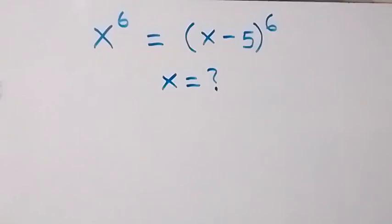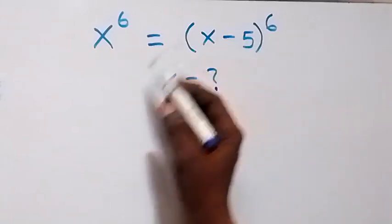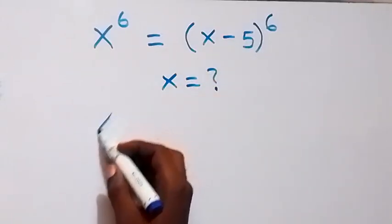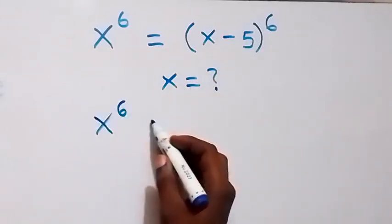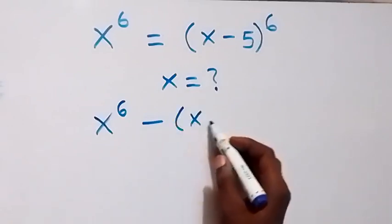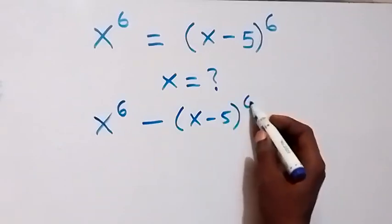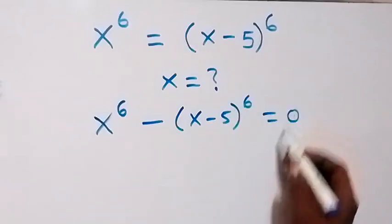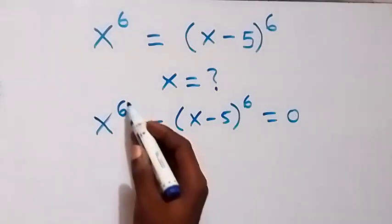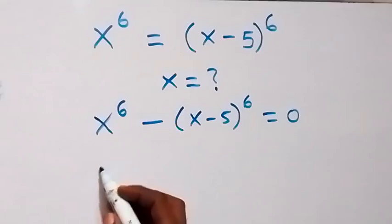Hello, you are welcome. How to solve this nice exponential equation — from here, to find the value of x. Let's take everything to the left side and we have x raised to power 6 minus, in bracket, x minus 5 raised to power 6, equals to 0.